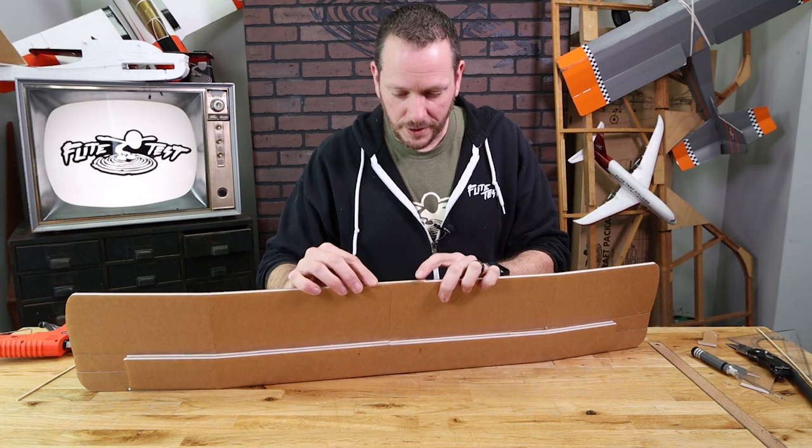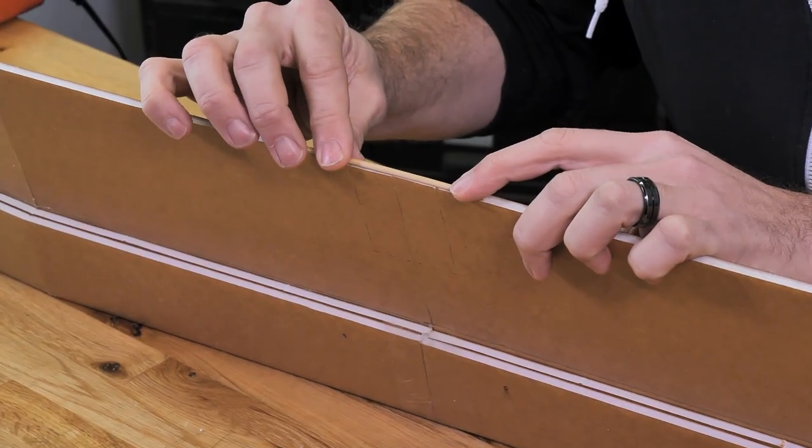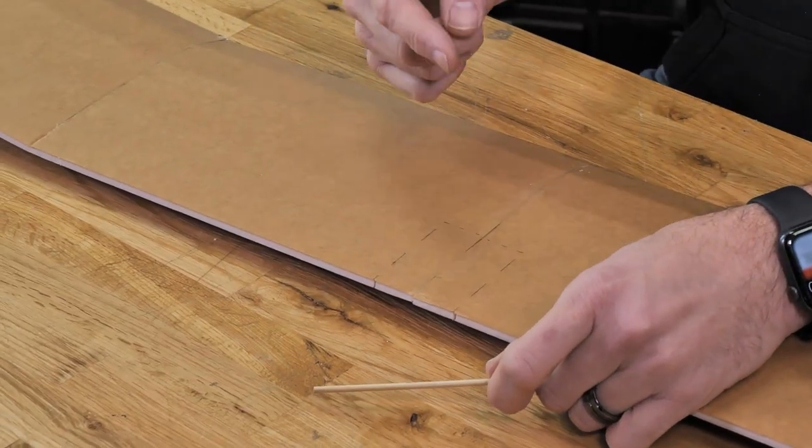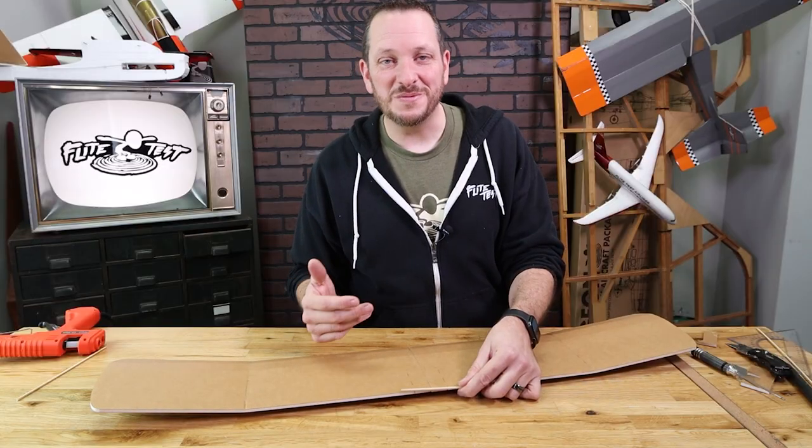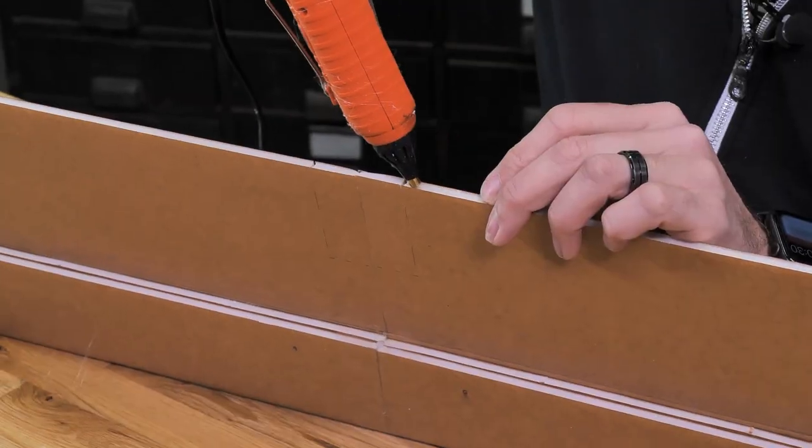We can now center this up right over top here, just like you see here. If you're going to be doing the conventional trainer pusher configuration, you can always cut this out. This is nothing more than reinforcement for your rubber bands so the rubber bands don't cut into your foam board.